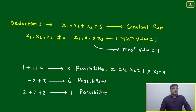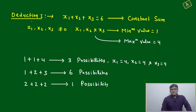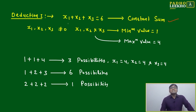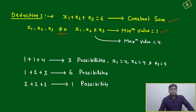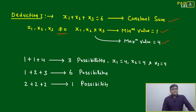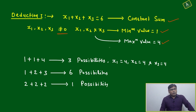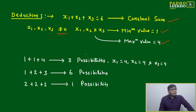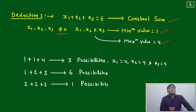First deduction: x1 + x2 + x3 = 6, with each value drawn from 1 to 9 (not zero). So the minimum value is 1 and maximum value is 4. This is not a permutations and combinations question where you apply one formula — this is logical reasoning. You have to consider all possibilities, because questions will ask about specific scenarios and particular values.